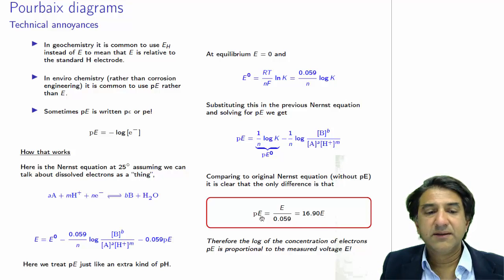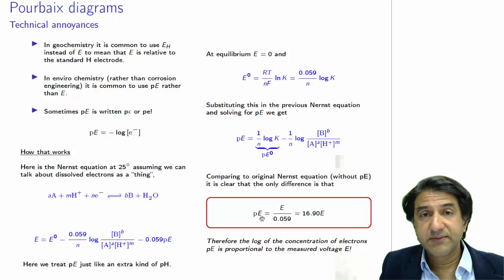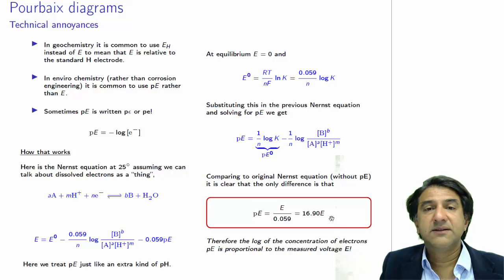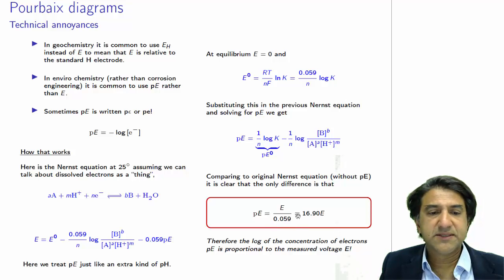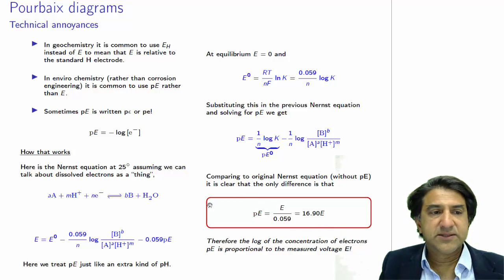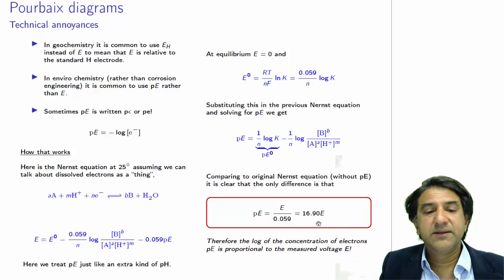So PE, rather counter-intuitively, is directly proportional to E. Both of these things have the same units, volts. Well, actually not really, because this 0.059 has a particular set of units. It's actually dimensionless, because it's a log of a dimensionless quantity, which is actually activity. And the only difference is that E and PE are different by a factor, 16.9.